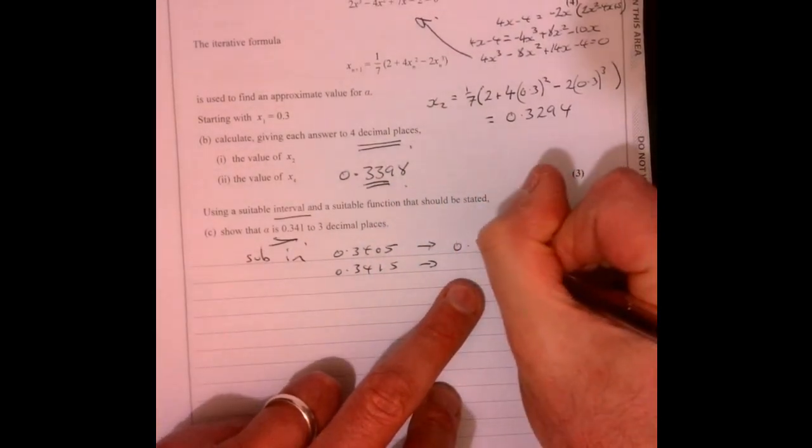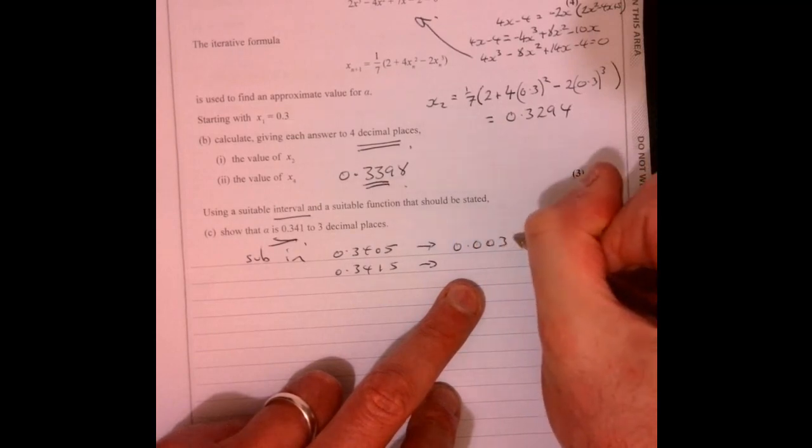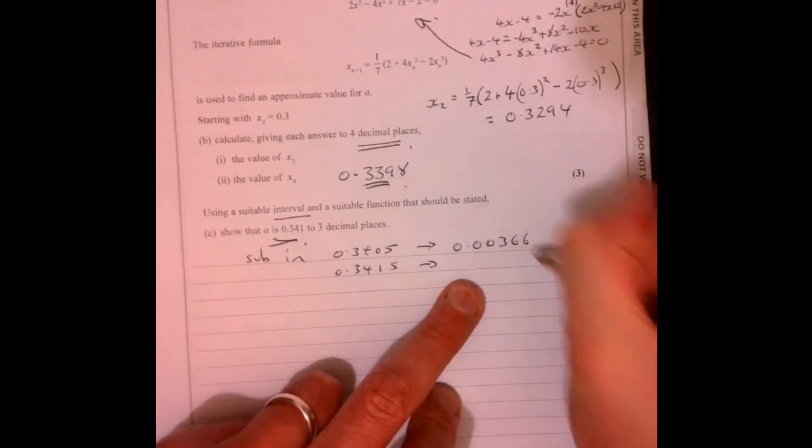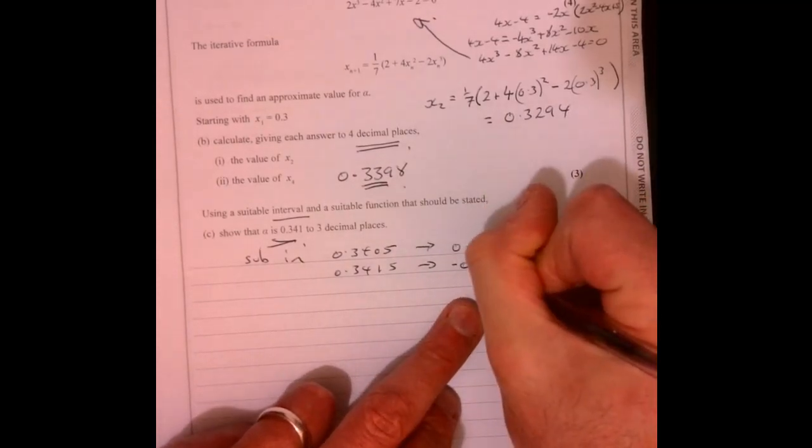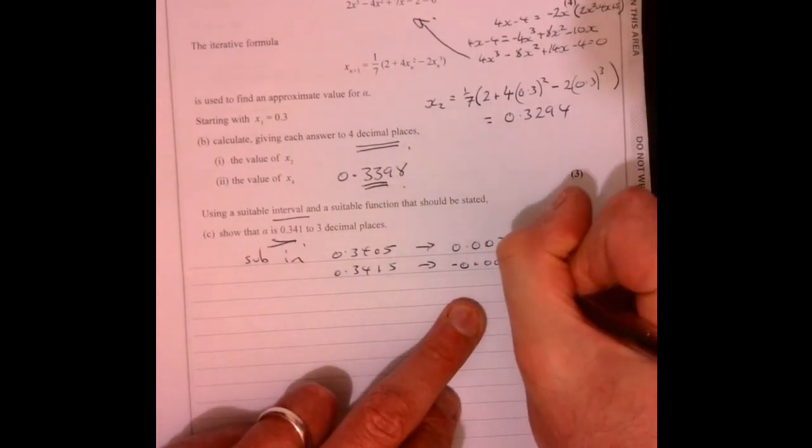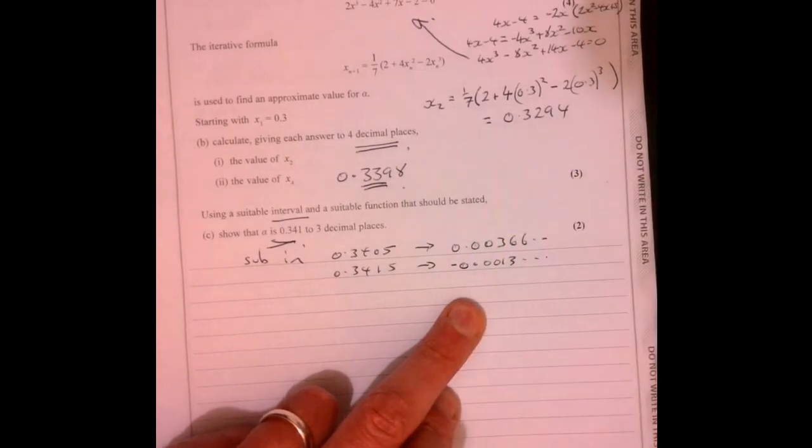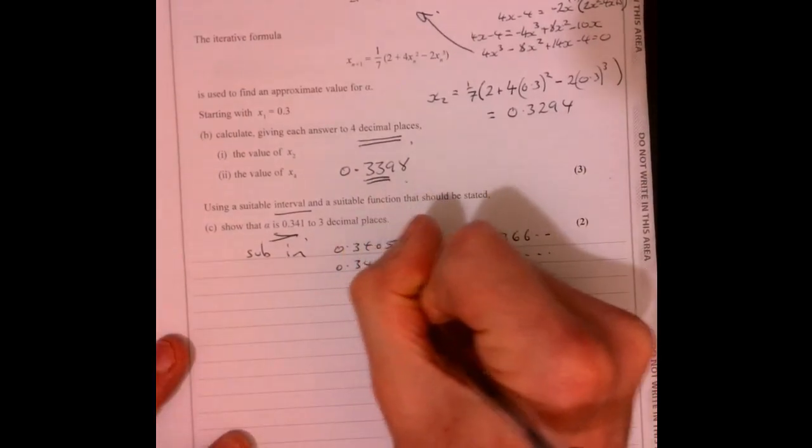Well, this figure will give us 0.0366 and a bit more. And this figure gives us minus 0.013 and a bit more. And basically, there's a change of sign.